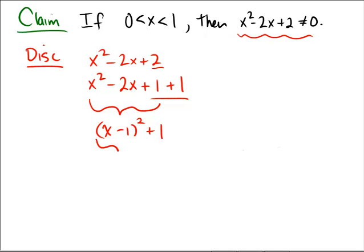We know that anything squared is always going to be larger than or equal to 0. So the entire expression is always going to be larger than or equal to 1, and therefore there's no way that it could ever be equal to 0.